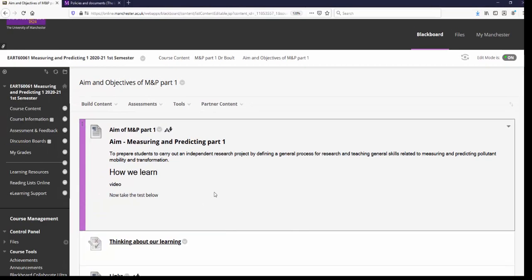This is just a short introductory video to cover the aim of Measuring and Predicting Part 1. The aim is to prepare you to carry out an independent research project by defining a general process of research and then teaching general skills related to measuring and predicting pollutant mobility and transformation.